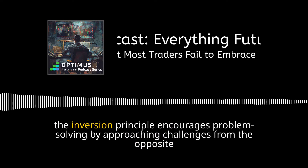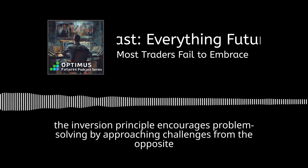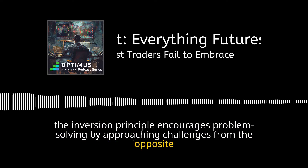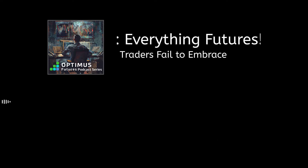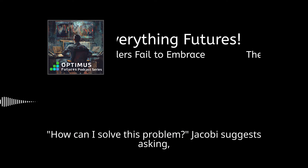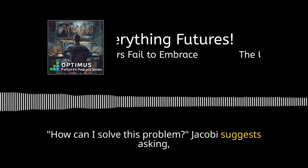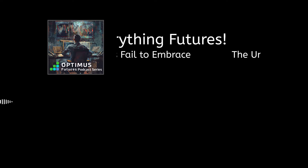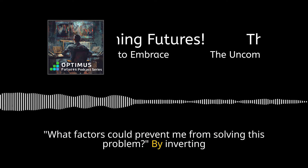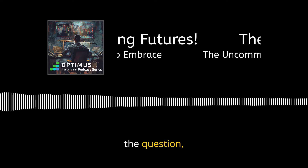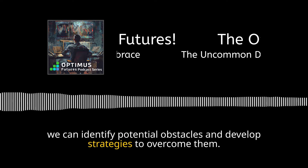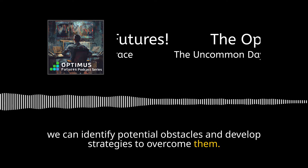At its core, the inversion principle encourages problem-solving by approaching challenges from the opposite direction. Instead of asking, 'How can I solve this problem?' Jacobi suggests asking, 'What factors could prevent me from solving this problem?' By inverting the question, we can identify potential obstacles and develop strategies to overcome them.